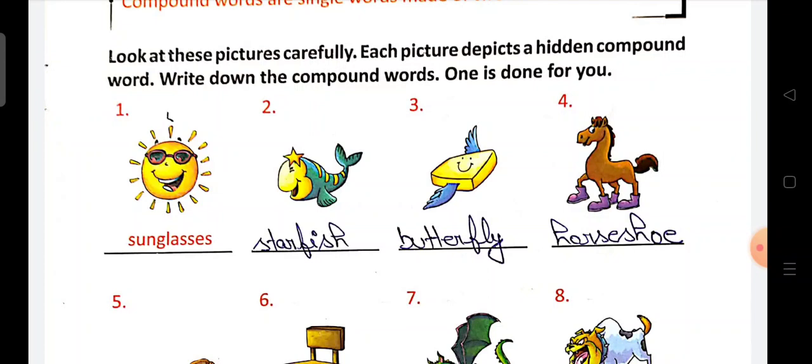Third one, butter hai. Butter ki picture dikhaye rahi hai, or butter ke do feathers, feathers jo fly karte hai, so it is butterfly. Number four, horse, or us ne kya pehen rakhe hai shoes, so horseshoe.